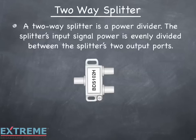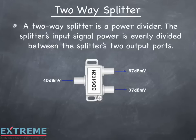A two-way splitter is considered a power divider. The splitter's input signal is evenly divided between the splitter's two output ports. If a splitter divides the signal equally, why when we inject a 40 dBmV signal into the input, don't we have 20 dBmV — or half the input signal — on both output ports instead of the 37 dBmV shown here? We have to look at the splitter from a power perspective.